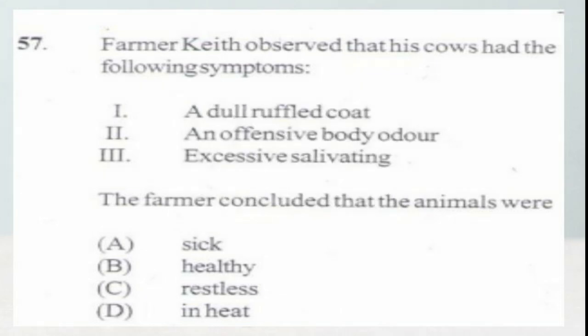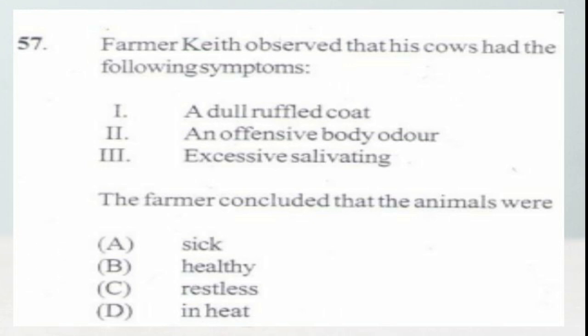Question number 57. Farmer Keith observed that his cows had the following symptoms: 1. A dull rough coat, 2. An offensive body odor, 3. Excessive salivating. The farmer concluded that the animals were: A. Sick, B. Healthy, C. Restless, D. In heat. The answer is A, sick. Remember that a rough coat is a sign that the animal has internal infestation such as worms.